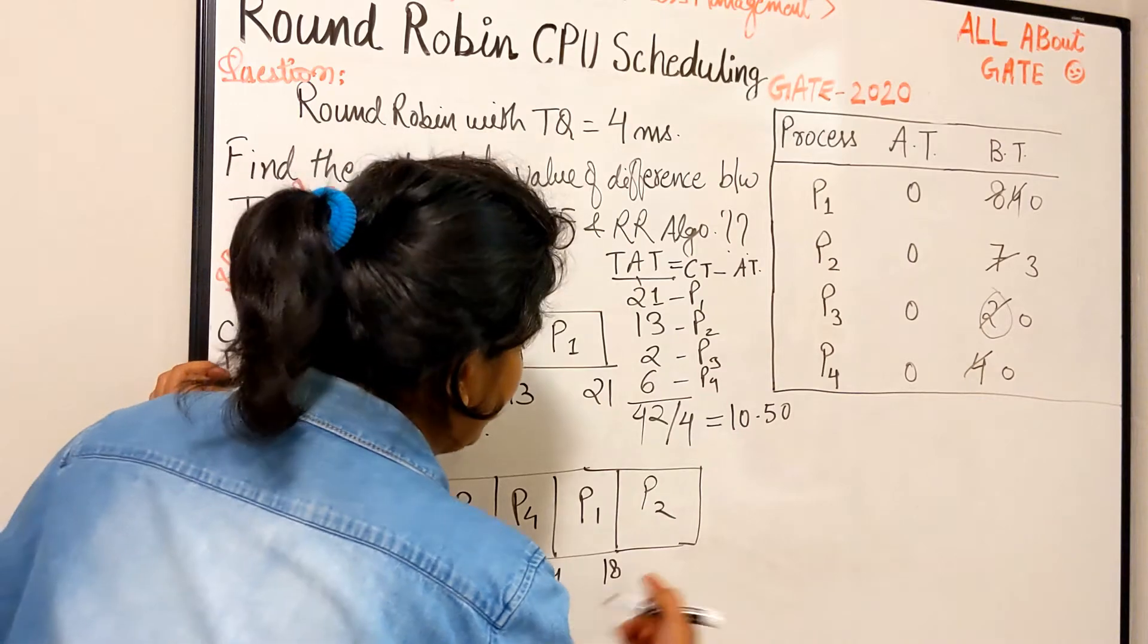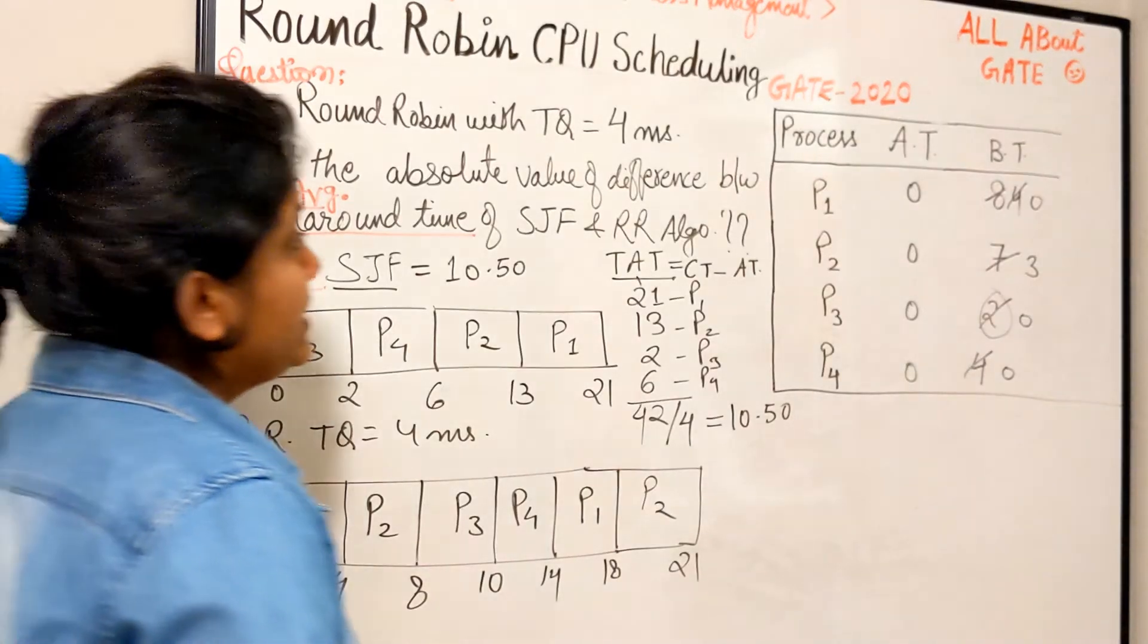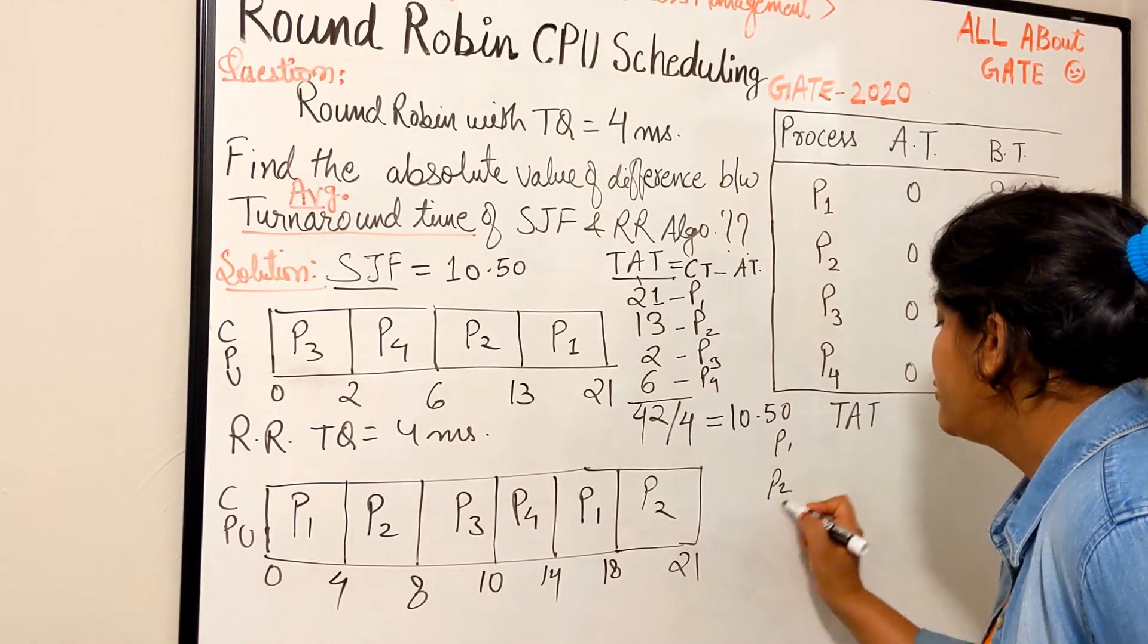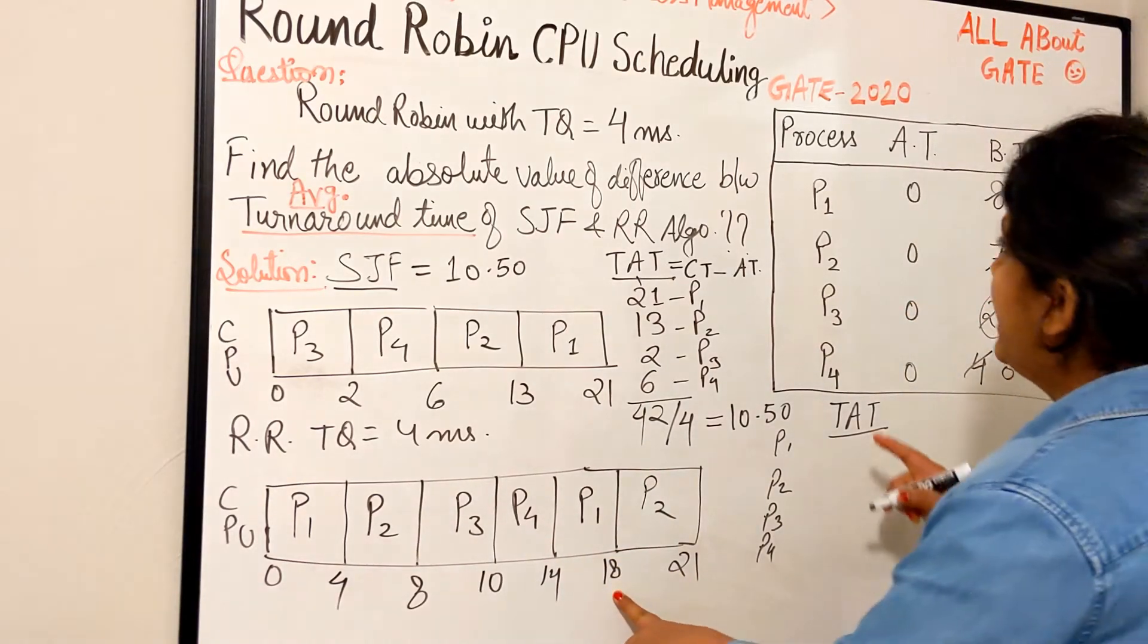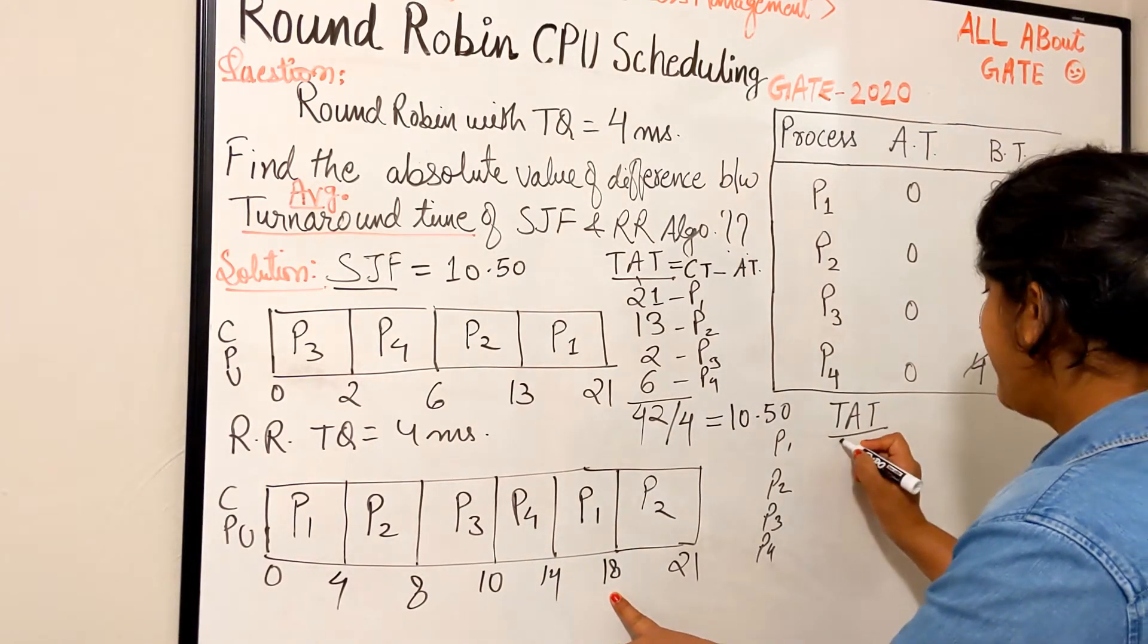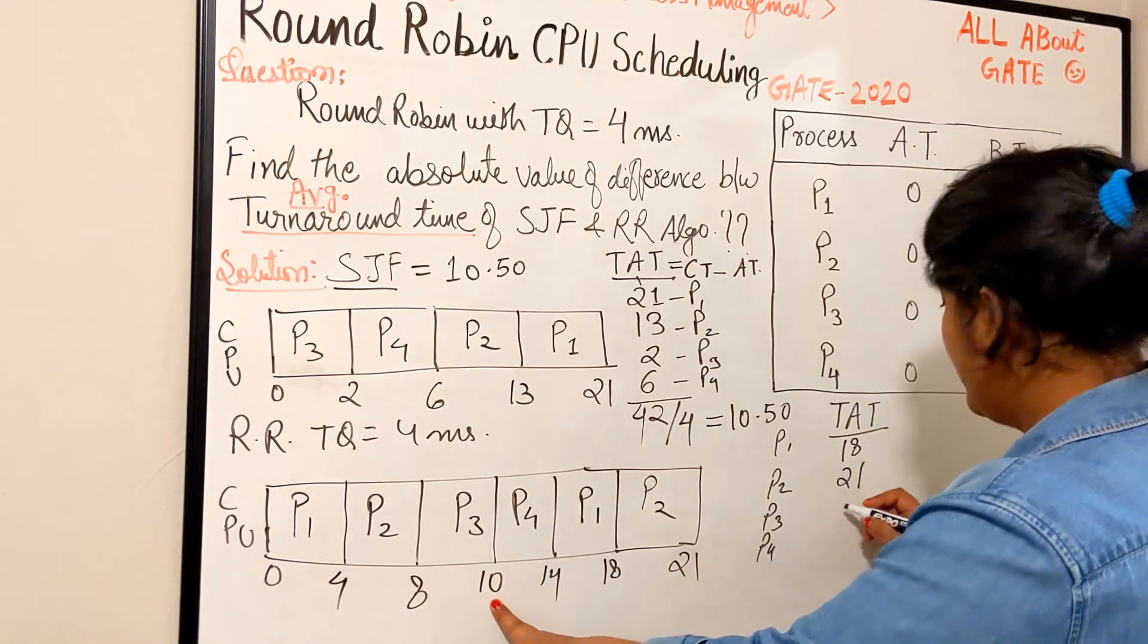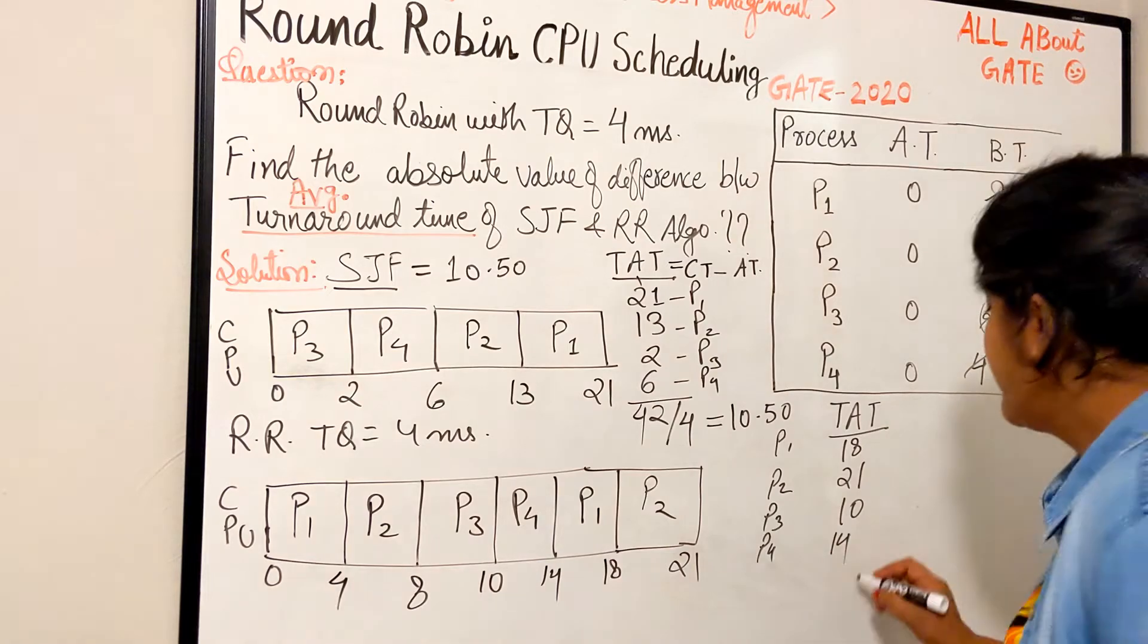Now the turnaround time for all processes in Round Robin. P1, P2, P3, P4. P1 finishes at 18, arrival is 0, so 18 minus 0 equals 18. P2 finishes at 21, so 21 minus 0 equals 21. P3 finishes at 10, so 10 minus 0 equals 10. P4 finishes at 14, so 14 minus 0 equals 14.